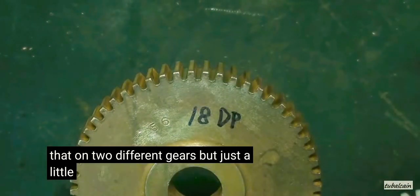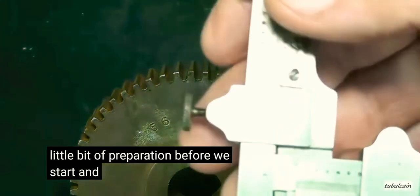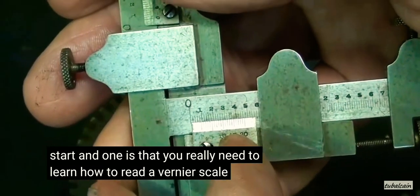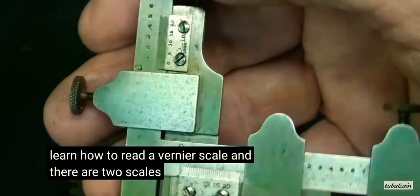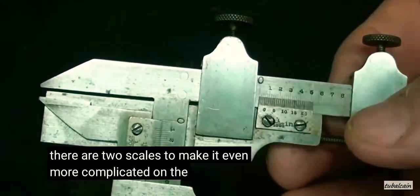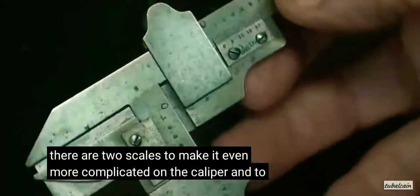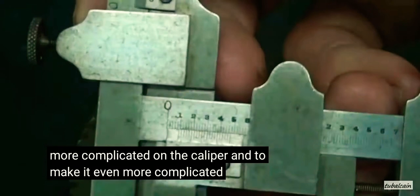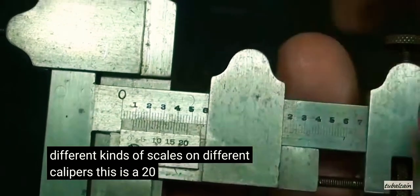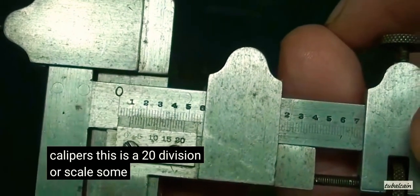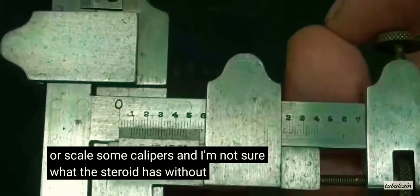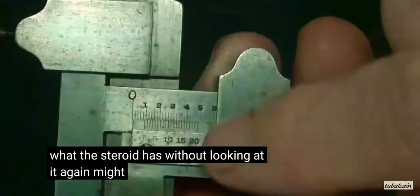But just a little bit of preparation before we start. And one is that you really need to learn how to read a vernier scale, and there are two scales to make it even more complicated on the caliper. And to make it even more complicated, there are different kinds of scales on different calipers. This is a 20 division vernier scale. Some calipers, and I'm not sure what the steroid has without looking at it again, might have a 25.